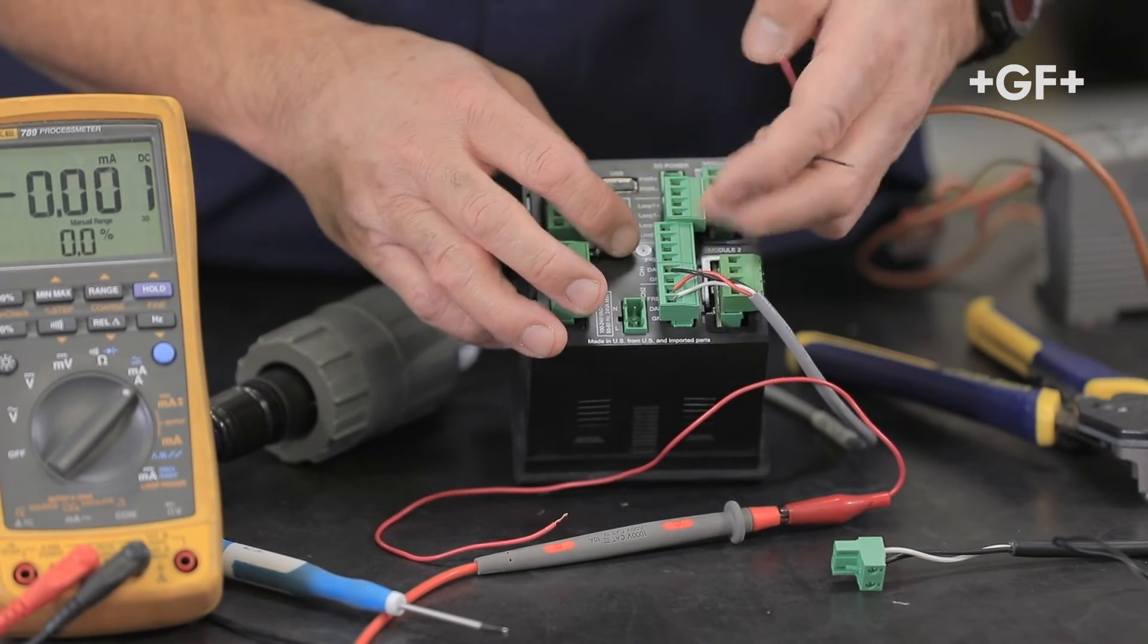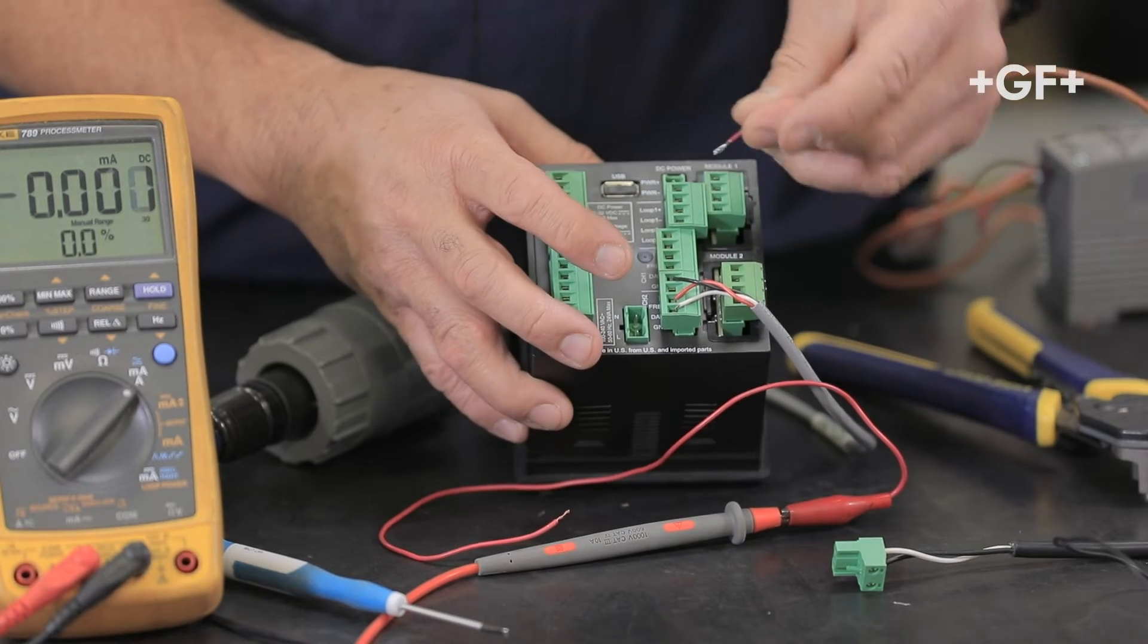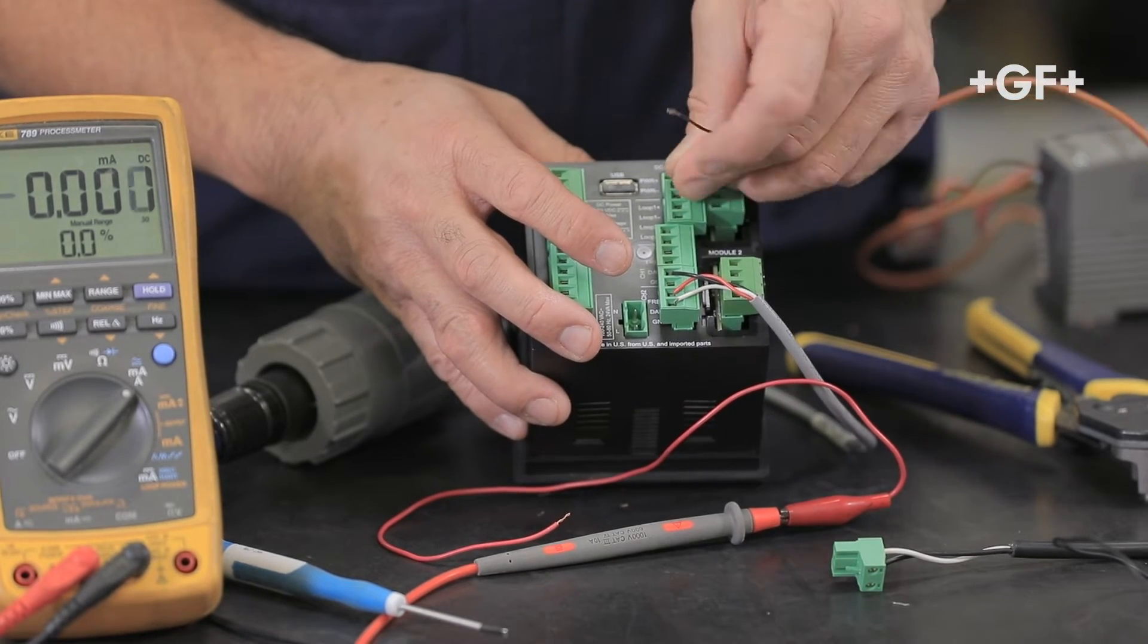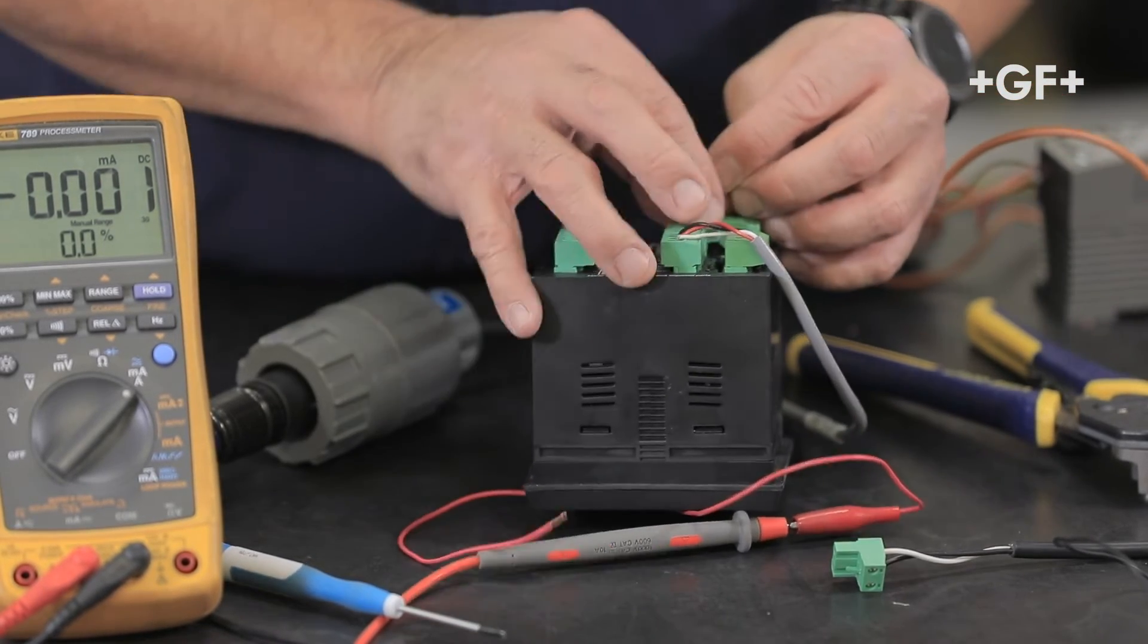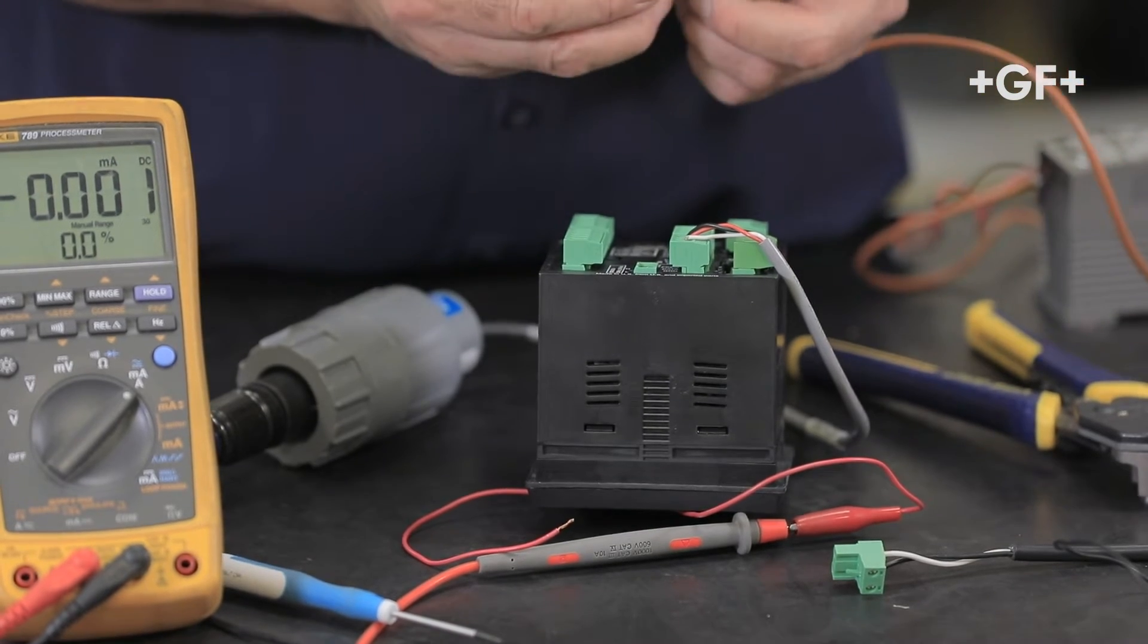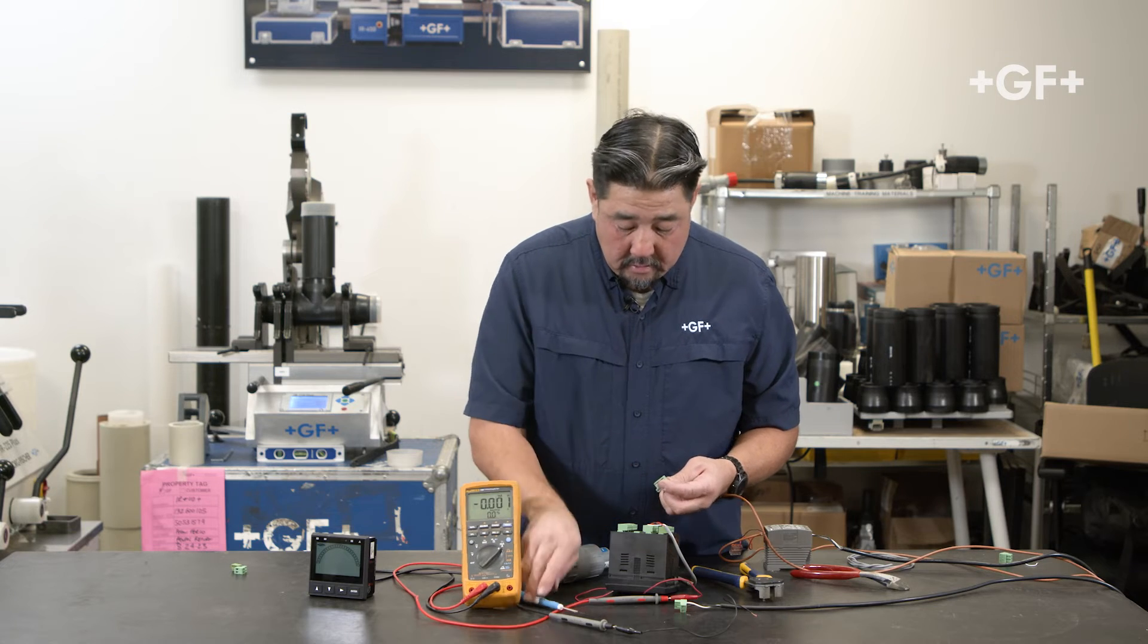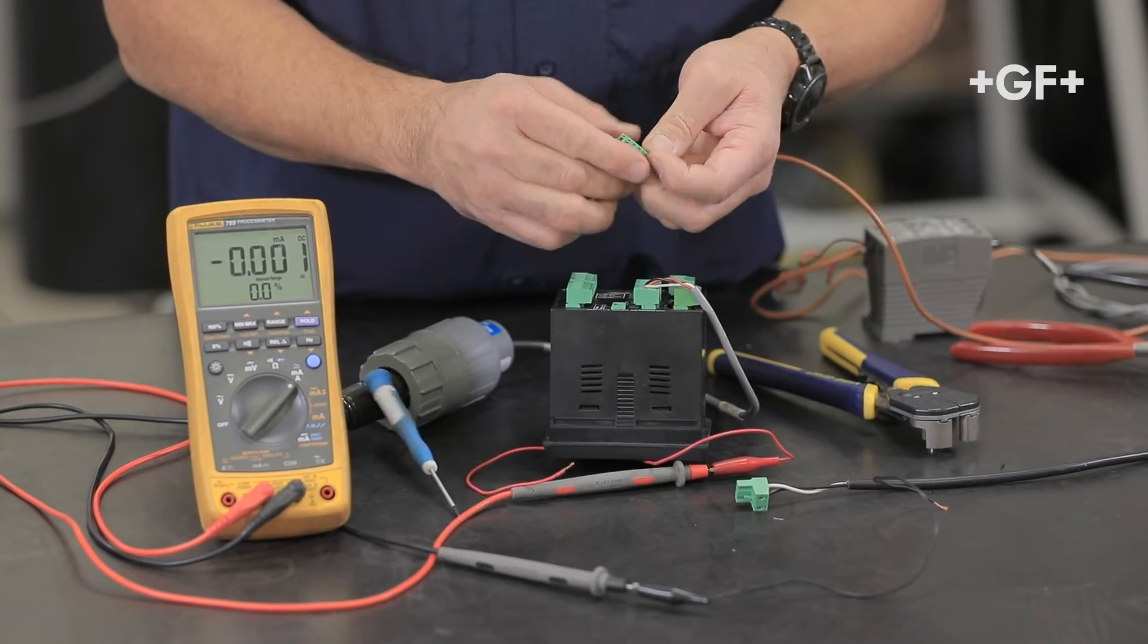So here's plus 24 volts. I'm going to land that here on loop one plus, right here like this. Okay, let me wire that really quick. That'll look like that.